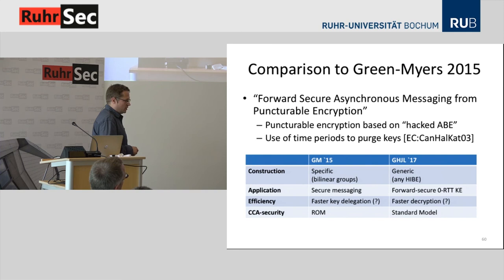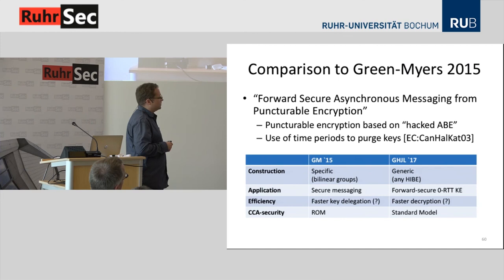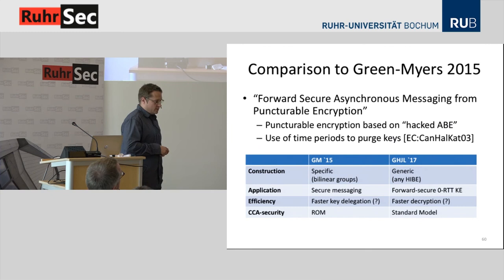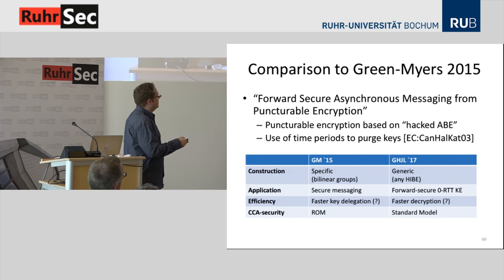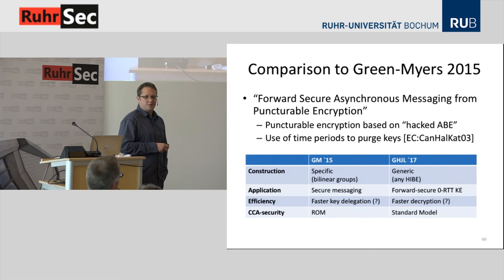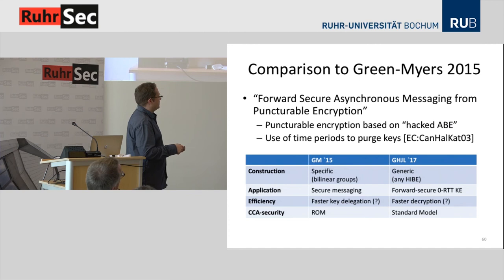Our results are inspired by work of Green and Myers called Forward Secure Asynchronous Messaging. They also described a method to construct a punctured encryption scheme, but followed a completely different approach. A major difference is that their construction relies on specific bilinear groups, while ours is based on any hierarchical IBE scheme. It's difficult to compare efficiency because both proposals are too far from practice to get running today, and the distinction between the random oracle model and the standard model may not make such a big difference here.